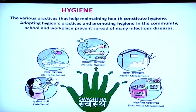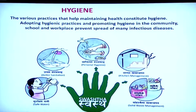We have just listed the characteristics we look for in a healthy person. The next question is: how do we remain healthy? The ways that help us remain healthy are discussed under the heading of hygiene. The word hygiene has been derived from a Greek word, Hygieia, the goddess of health. Adopting hygienic practices and promoting hygiene in the community, schools, and workplace prevents the spread of many infectious diseases.